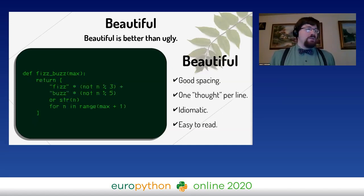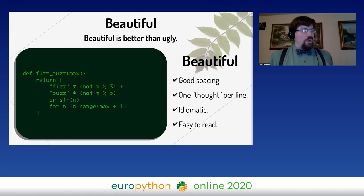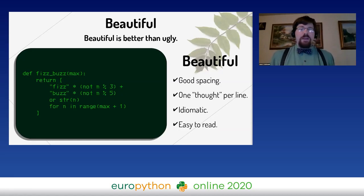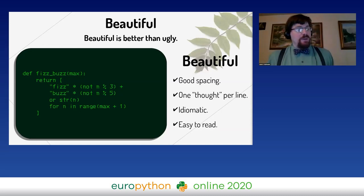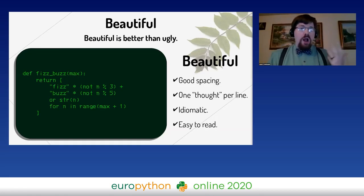Here's the same goal done beautifully. It employs better spacing, especially around operators. There's one thought per line, so it's much easier to break down what's going on. It's idiomatic — I'm using Python as Python, using a list comprehension and the star operator. Once you know the syntax, it's very obvious what I'm doing, and this is easy to read. Not all list comprehensions are automatically beautiful, but this is one case where they are.